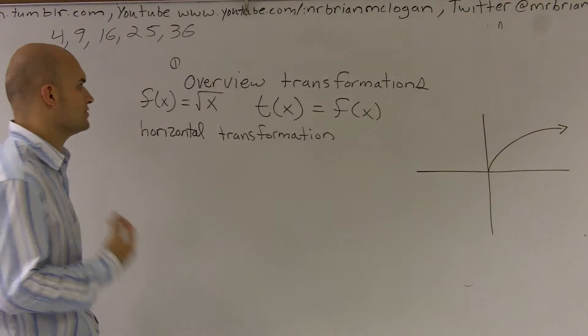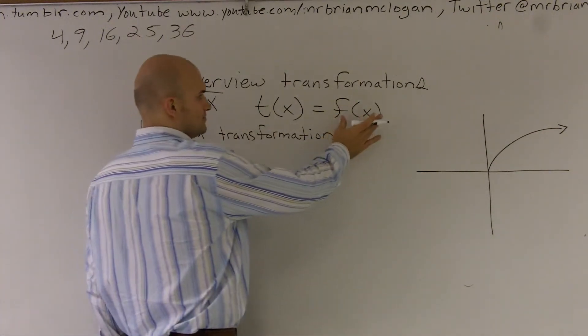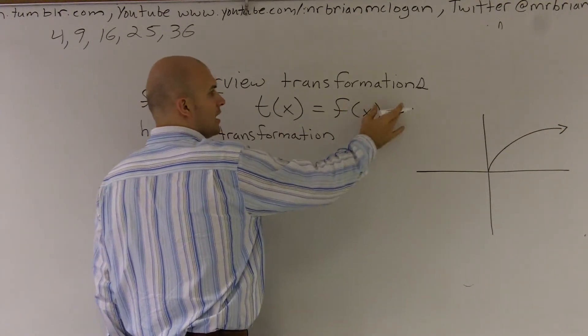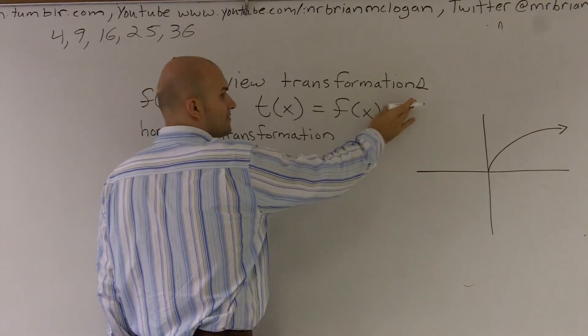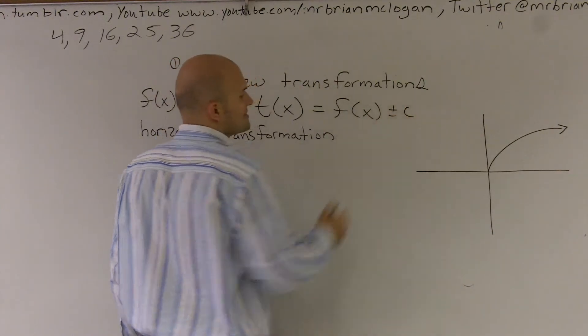When we're dealing with horizontal transformations, what we first looked at was when f(x), when we're doing vertical, we're adding it to our f(x). We're adding c to our f(x), pretty much a plus or minus c.